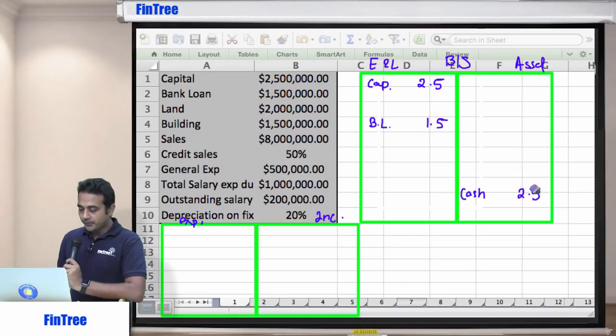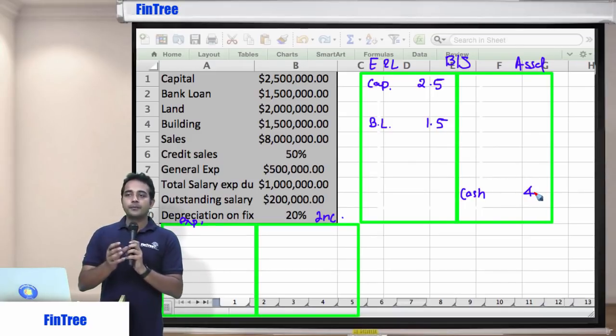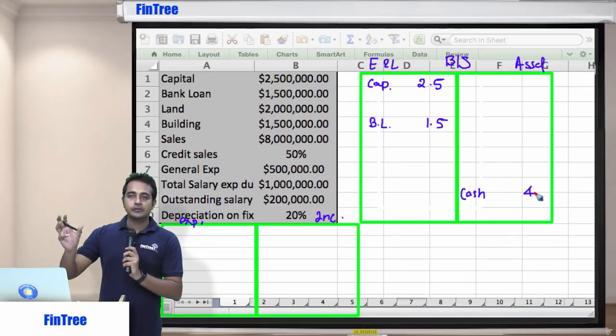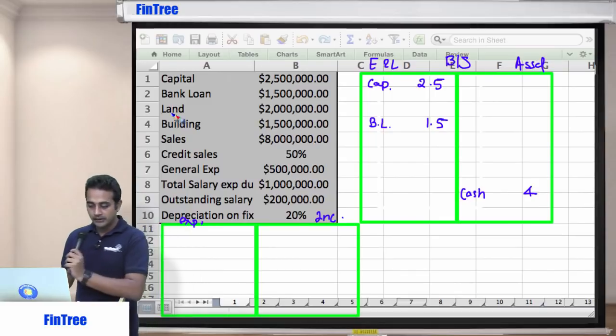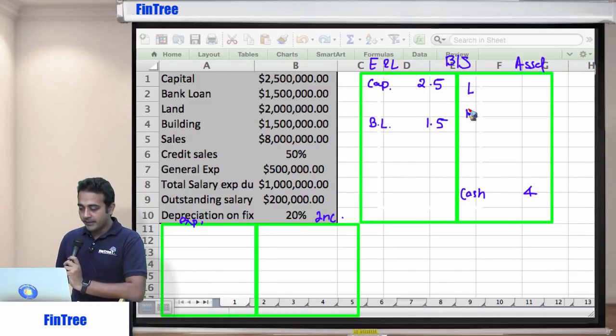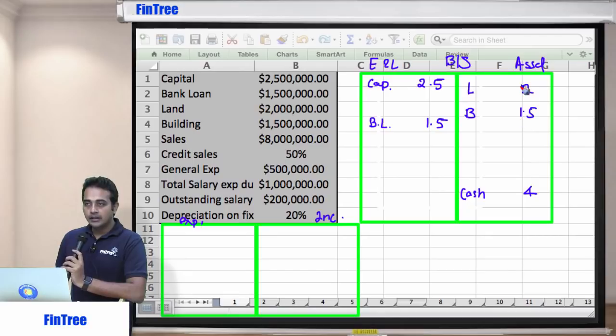Second effect will be cash. So your current cash, which is 2.5 will become 4. In real world, we build a separate account for cash and then we take the final balance, put that on the balance sheet. But I am going to do that here itself. Then land and building, so let me just call them as L and B. L is for 2 and B is for 1.5. So total is 3.5. So your cash will now become 0.5.